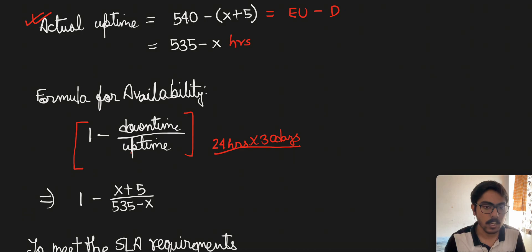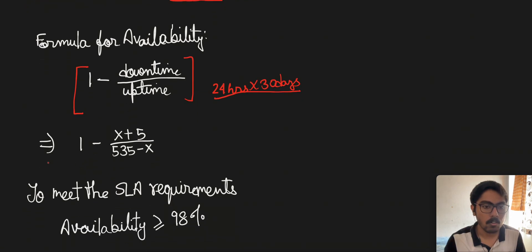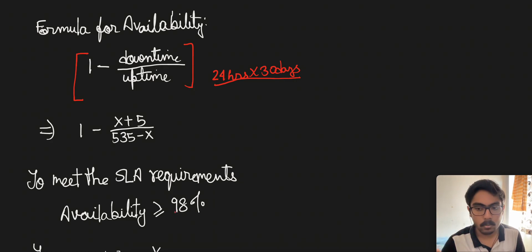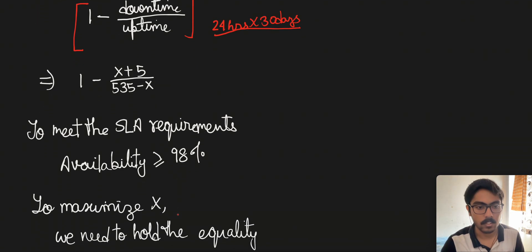We put the values into the formula: X plus 5 for the downtime, and 535 minus X for the actual uptime. This gives us the availability. To meet the SLA requirements, availability should be greater than or equal to 98%, because if the cloud provider is unable to provide 98% uptime, it means the SLA has been violated.